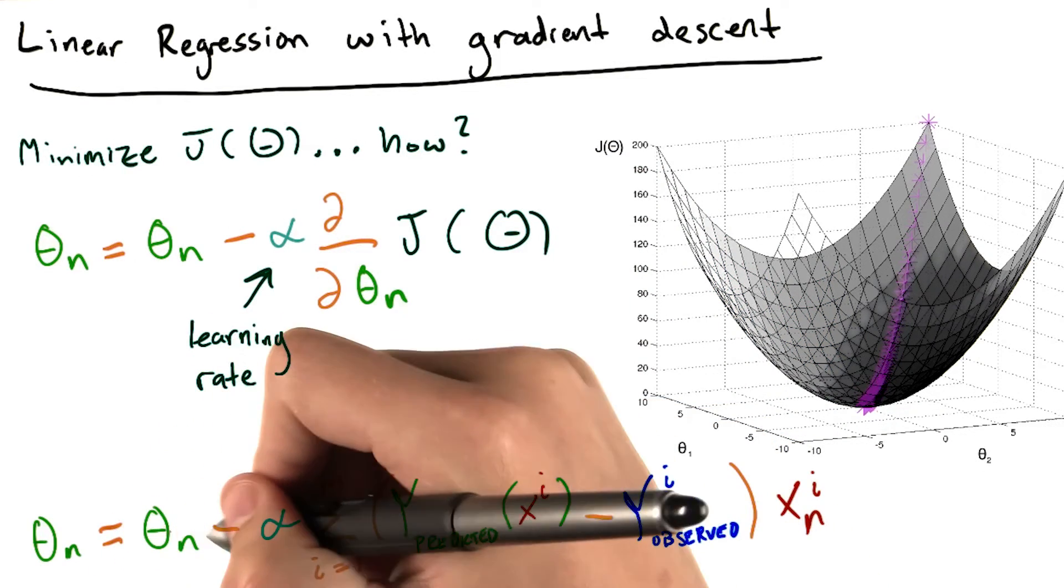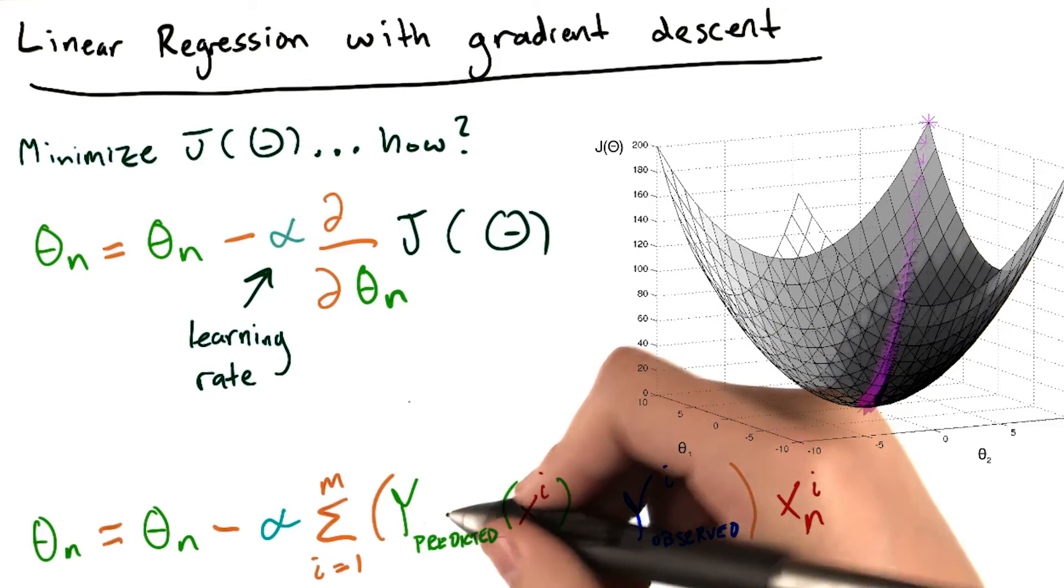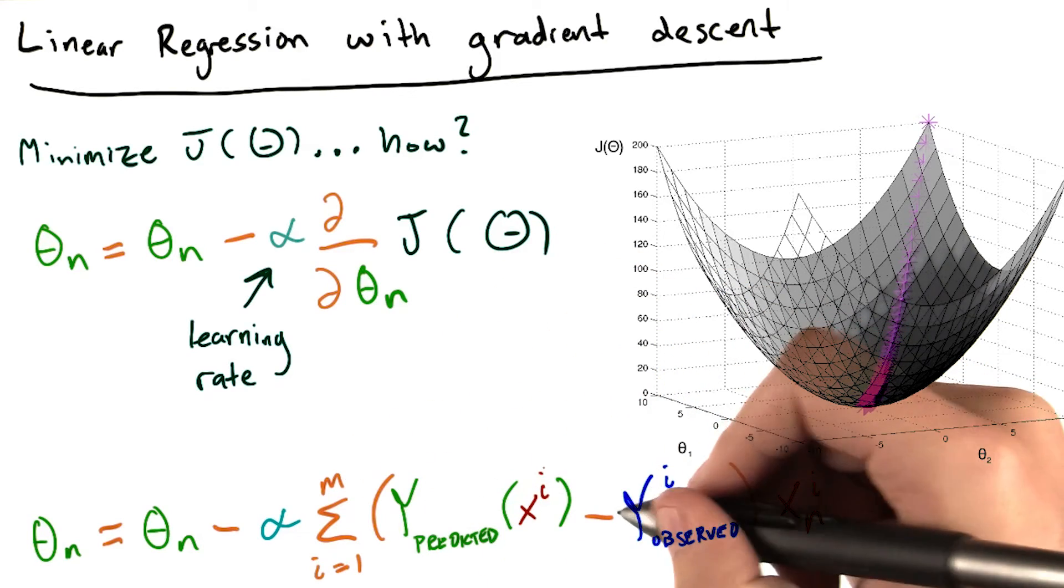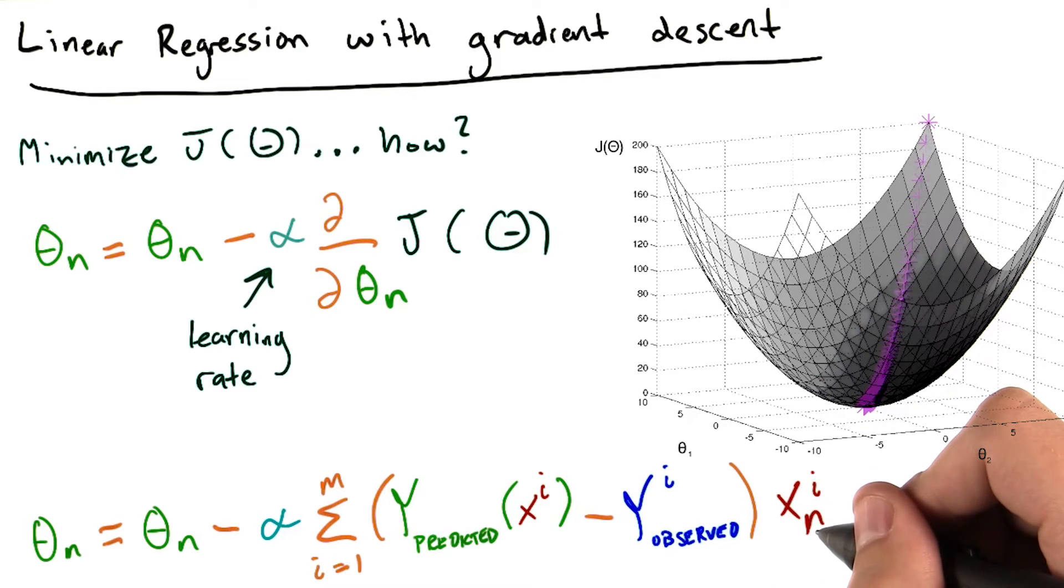Theta n equals theta n minus alpha times the sum from i equals 1 to m of y predicted of xi minus y observed xi times x sub n i.